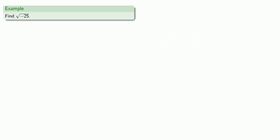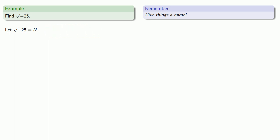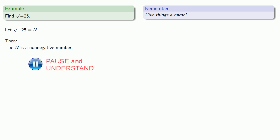How about the square root of negative 25? A useful idea in math — and in life — is to give things a name. Let the square root of negative 25 equal n. We've named the square root of negative 25, but remember, this is the principal square root, so we know that n is a non-negative number, and n squared must be equal to minus 25.